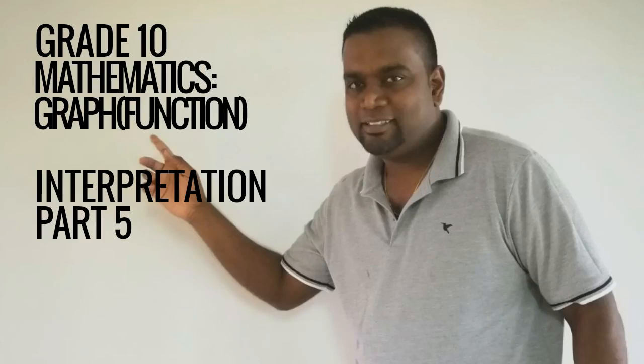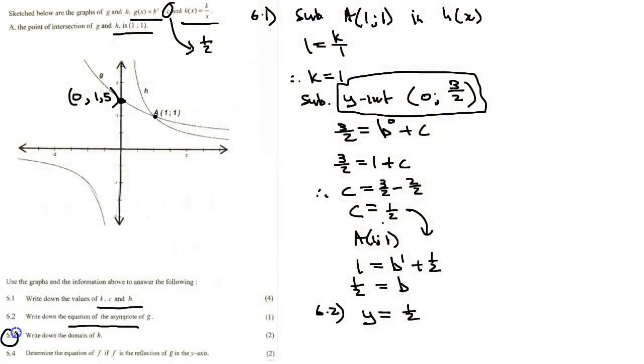Okay, so we're continuing and we're looking at example 6.3: write down the domain of h. So if we have to look here, the domain of h. Now the meaning of the word domain is for what values—domain meaning in a function's context means for what values of x does your function exist.